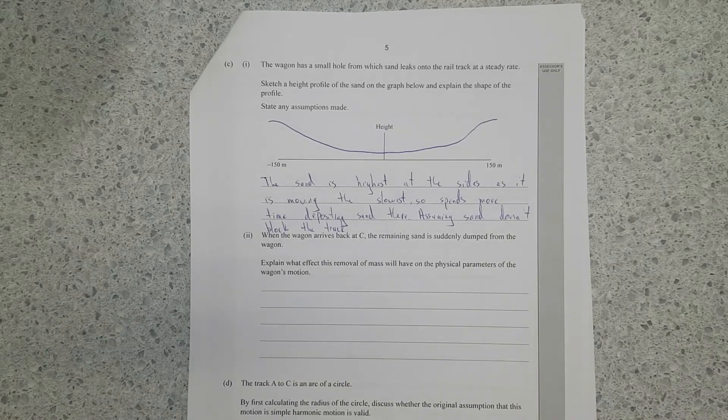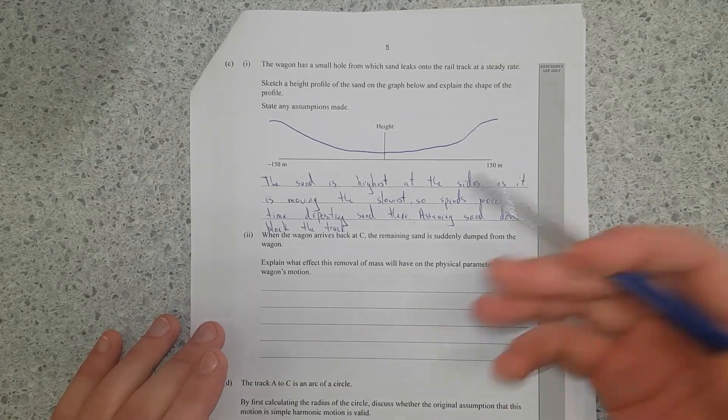I've said the sand is highest at the sides as it is moving the slowest, so spends more time depositing sand there, assuming sand doesn't block the track. Not really sure what else you can say. It's going to be going fast in the middle, less time in the middle, less sand.